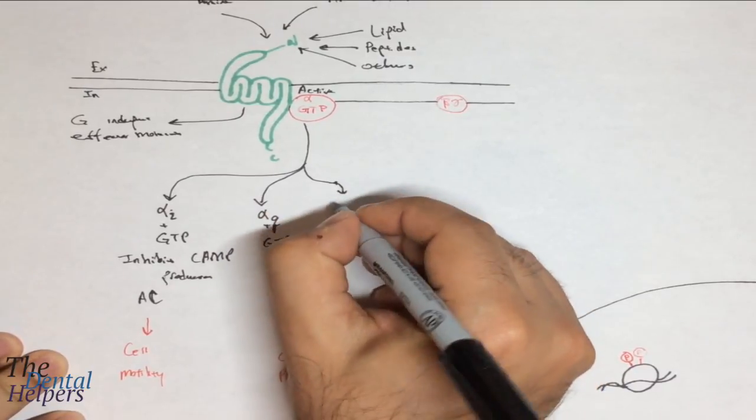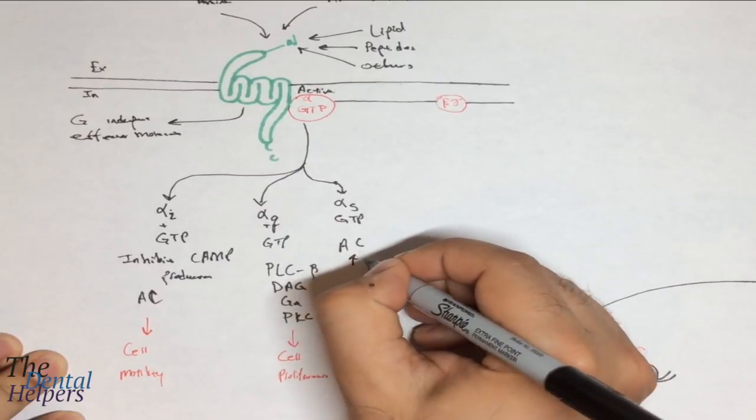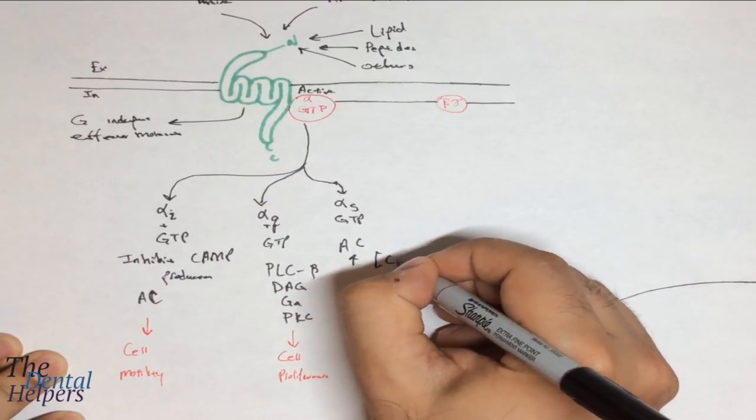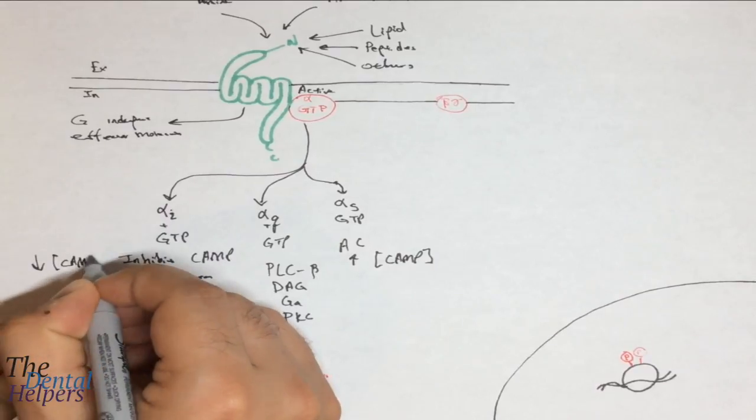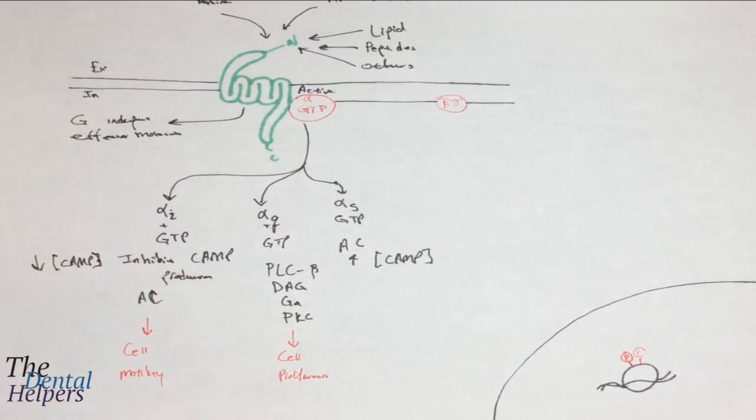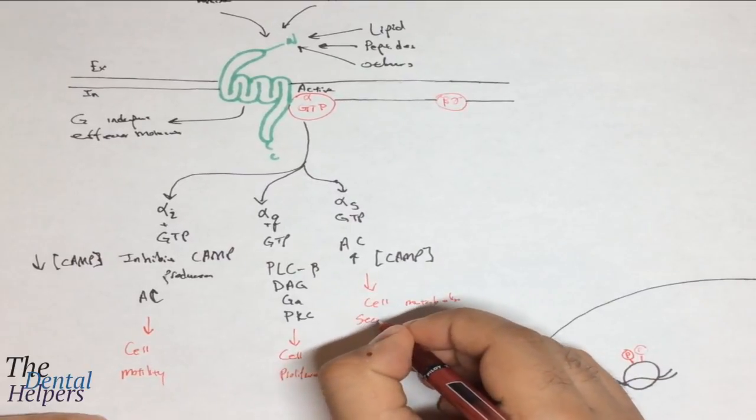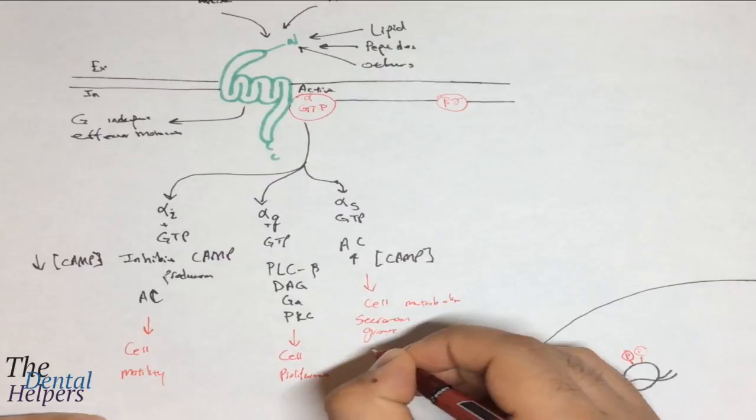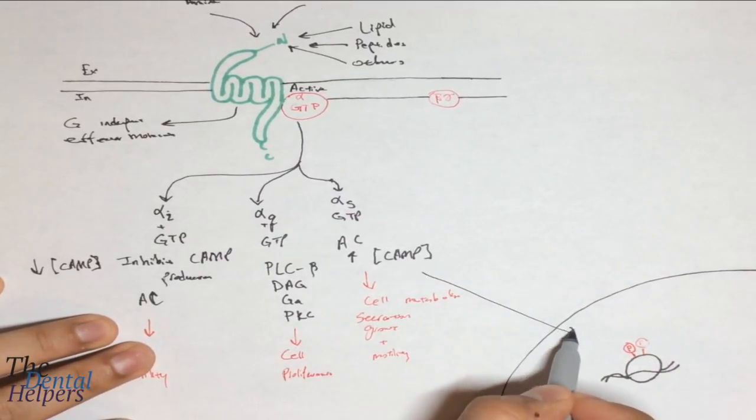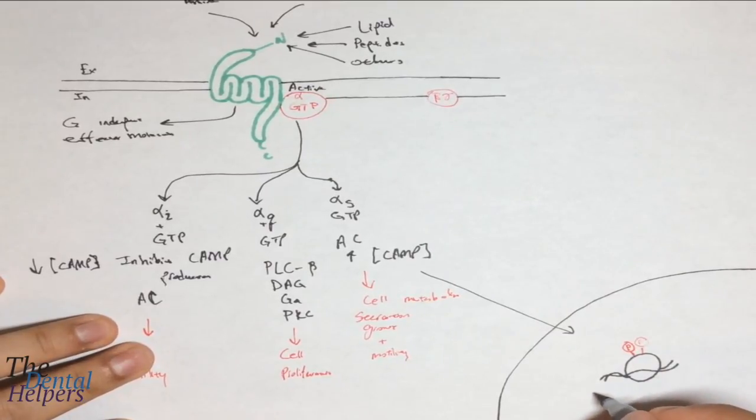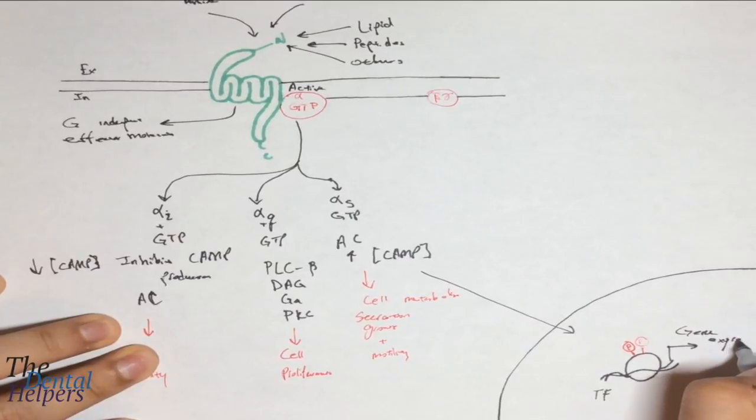Next we have alpha S bound to GTP, which is going to be involved with adenyl cyclase. It's going to increase cAMP concentration, whereas in the alpha I section we saw a decrease of cAMP concentration. This is going to be involved with cell metabolism, secretion, growth, and motility. This pathway is also going to go into the nucleus and impact transcription factors, allowing for gene expression and regulation.